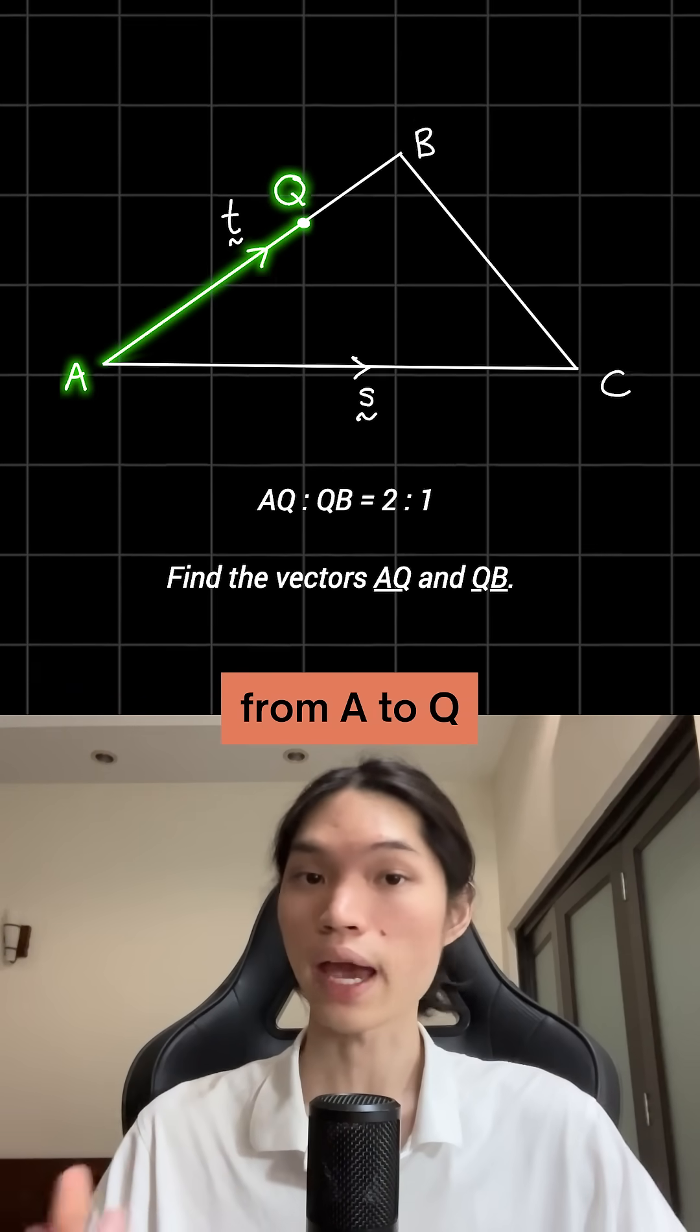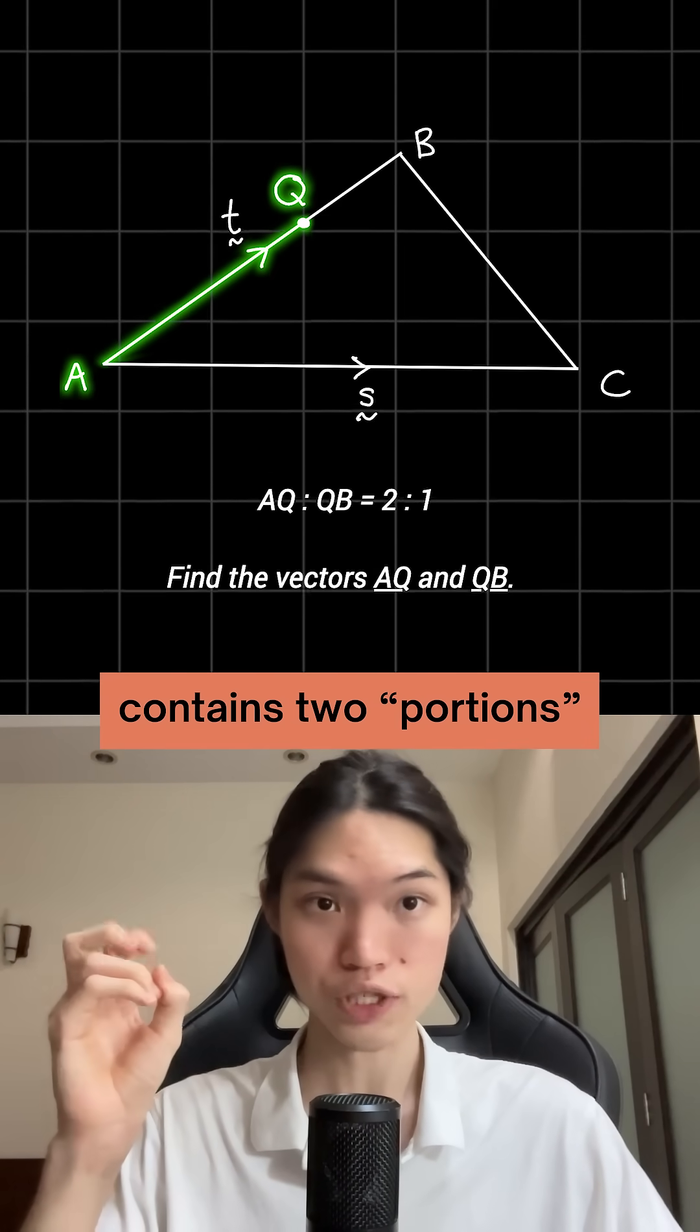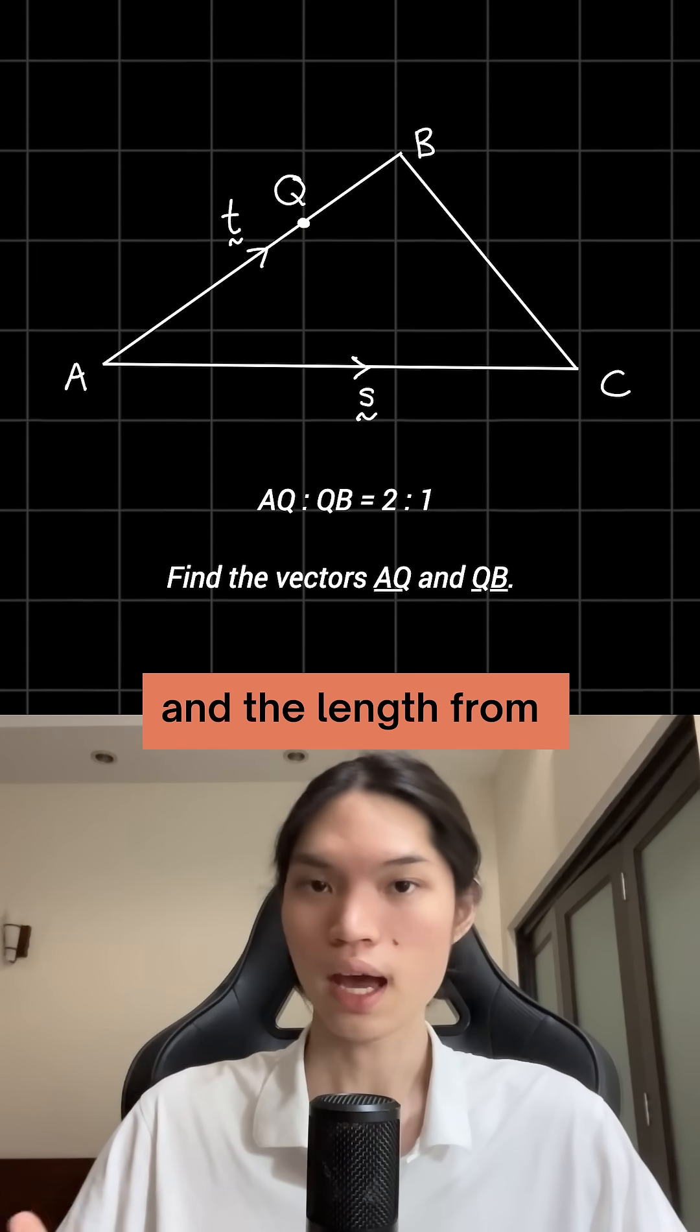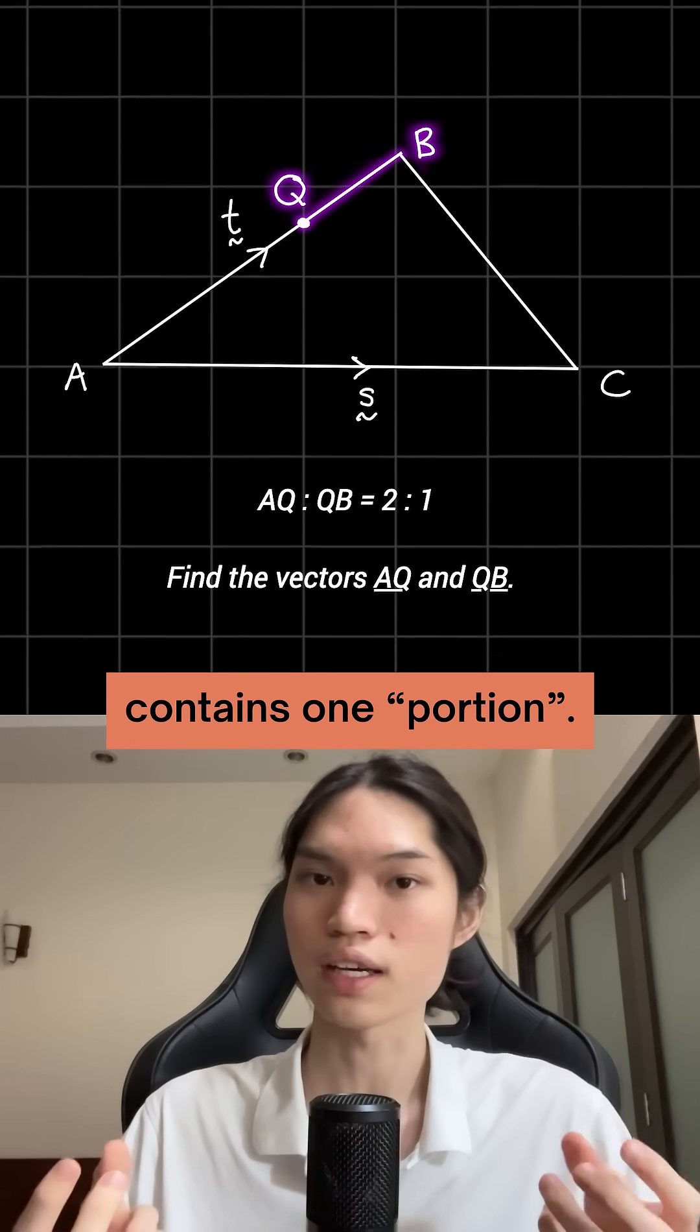Well, it means that the length from A to Q contains 2 portions that make up this vector called T, and the length from Q to B contains 1 portion.